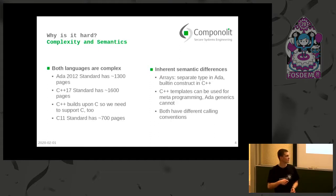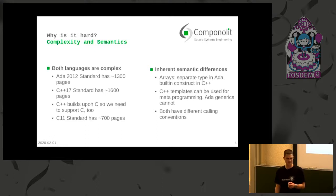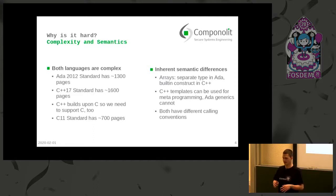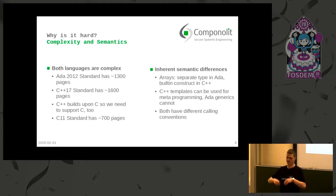C++ templates can be used for metaprogramming — they are actually Turing complete. Ada generics are not that versatile, which in my mind is a good thing. Also, arrays for example: in Ada they are a separate type with a specific index type. In C++ the array itself is just a built-in construct, and the index is just a constant expression that is cast into whatever type is needed at compile time.